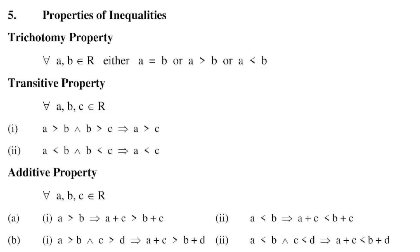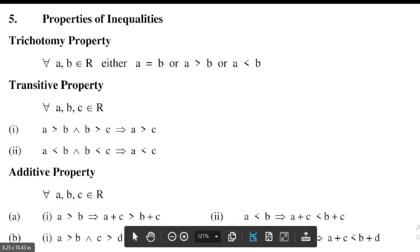Second, the transitive property: for all a, b, c belonging to real numbers — first, a greater than b and b greater than c implies that a greater than c; second, a less than b and b less than c implies that a less than c.